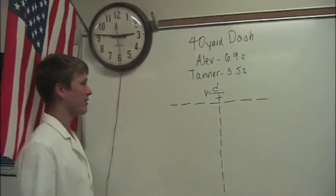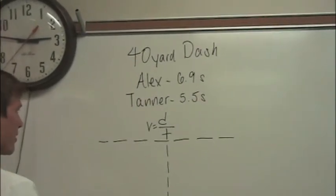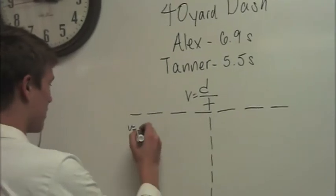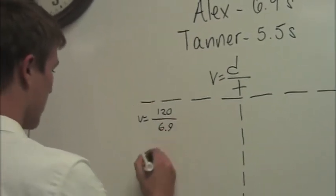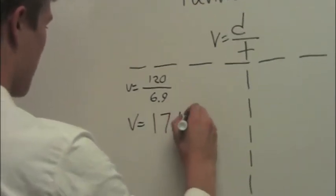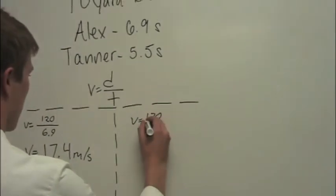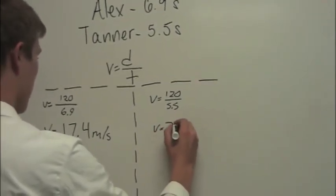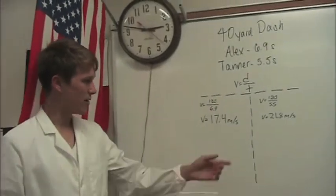We will now be calculating our athletes' average speed over the 40-yard dash using the formula for velocity: V equals distance over time — in feet. Alex's velocity: V equals 120 feet over 6.9 seconds, so his velocity is about 17.4 feet per second. For Tanner: V equals 120 over 5.5, giving Tanner an average velocity of 21.8 feet per second. Tanner was clearly much faster than Alex.